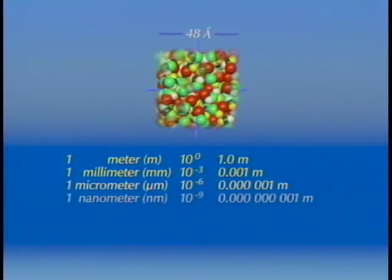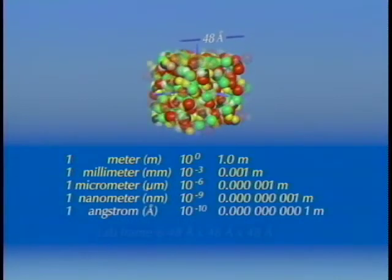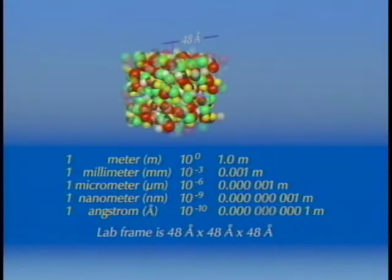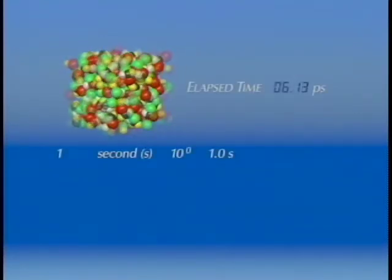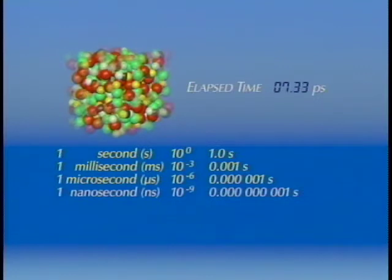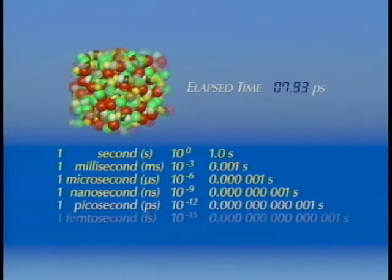The size of the cubic laboratory frame, containing 108 molecules of the specimen being studied, is 48 angstroms on a side, or about one billionth of a meter. The duration of each laser pulse is only a few picoseconds, that is, only a few million millionths of a second in duration. Each time step in the simulation is ten femtoseconds, or one one-hundredth of a picosecond.